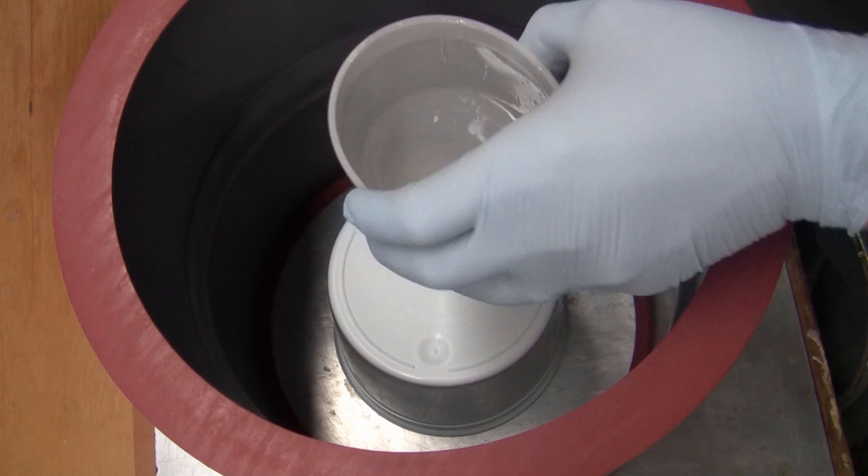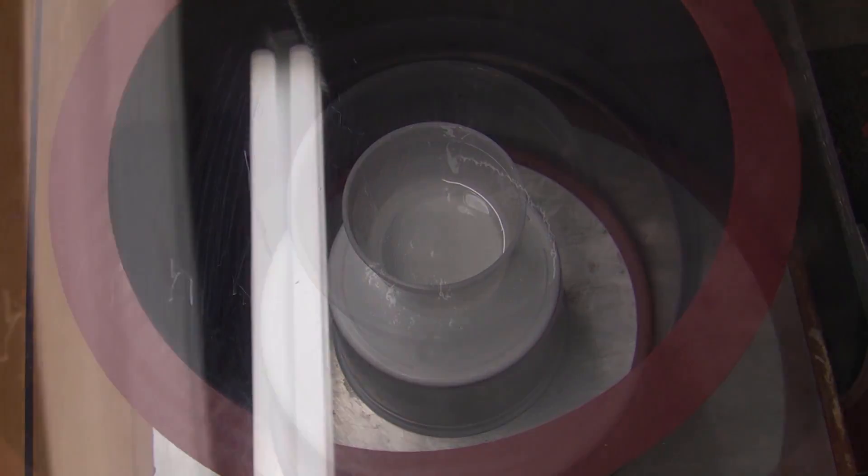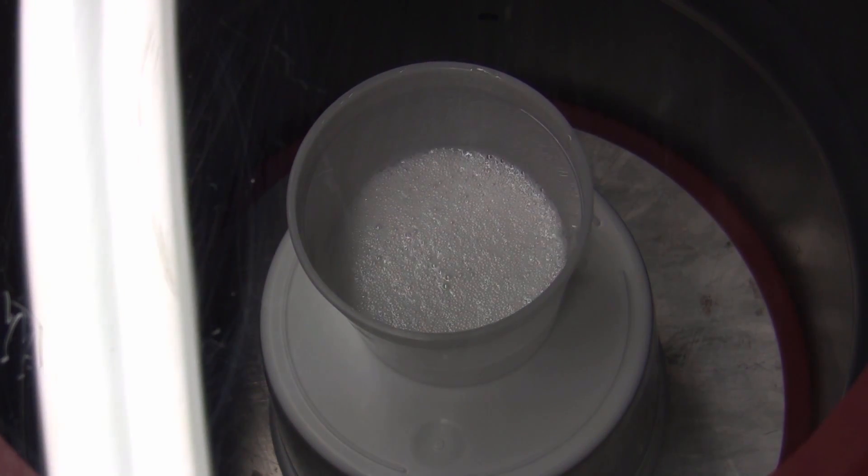We're going to go ahead and degas this resin before casting into our molds. As we introduce vacuum, you can see the system start to bubble or even give a resemblance of boiling. This is actual air evacuating the system.